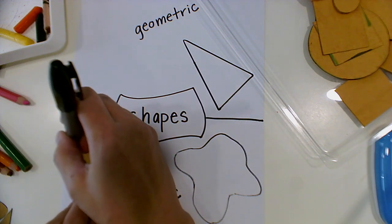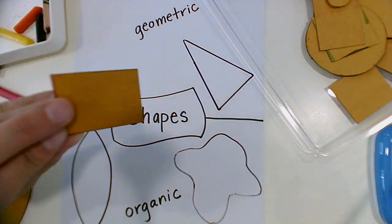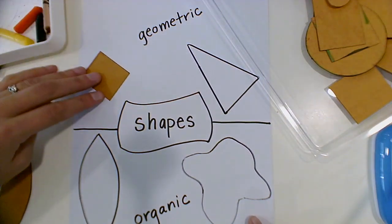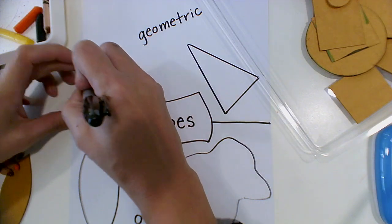And then I'm going to draw a square next, or I guess that's a little rectangle. That goes on the geometric side.